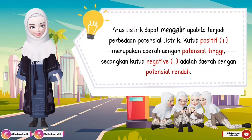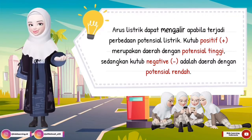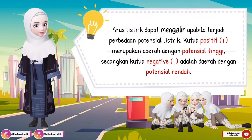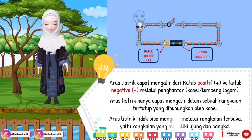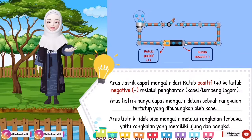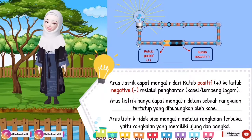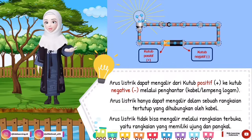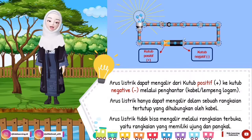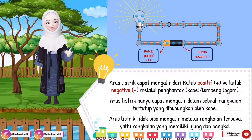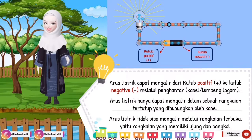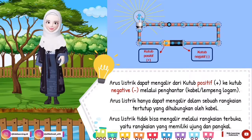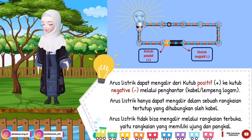Arus listrik ini dapat mengalir apabila terjadi perbedaan potensial listrik. Kutub positif merupakan daerah dengan potensial tinggi, sedangkan kutub negatif adalah daerah dengan potensial rendah. Arus listrik ini dapat mengalir dari kutub positif ke kutub negatif melalui penghantar. Media penghantar ini bisa berupa kabel atau lempeng logam. Arus listrik hanya dapat mengalir dalam sebuah rangkaian tertutup yang dihubungkan oleh kabel, jadi arus listrik tidak bisa mengalir melalui rangkaian terbuka, yaitu rangkaian yang memiliki ujung dan pangkal.